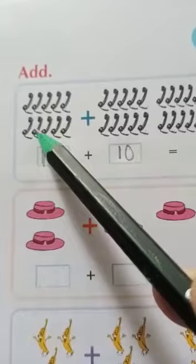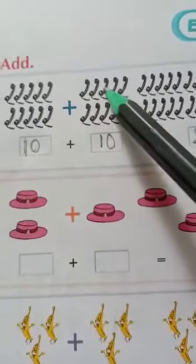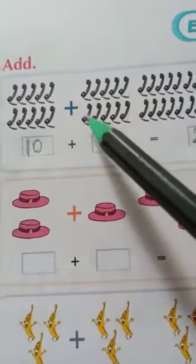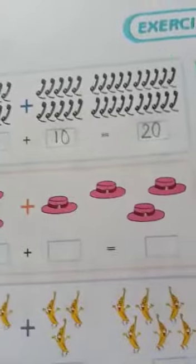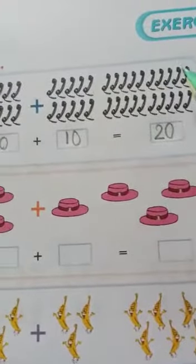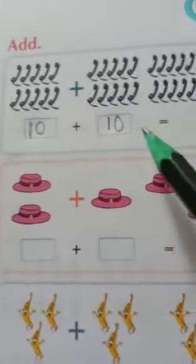We count the receivers and add them together and write here 20 receivers together.